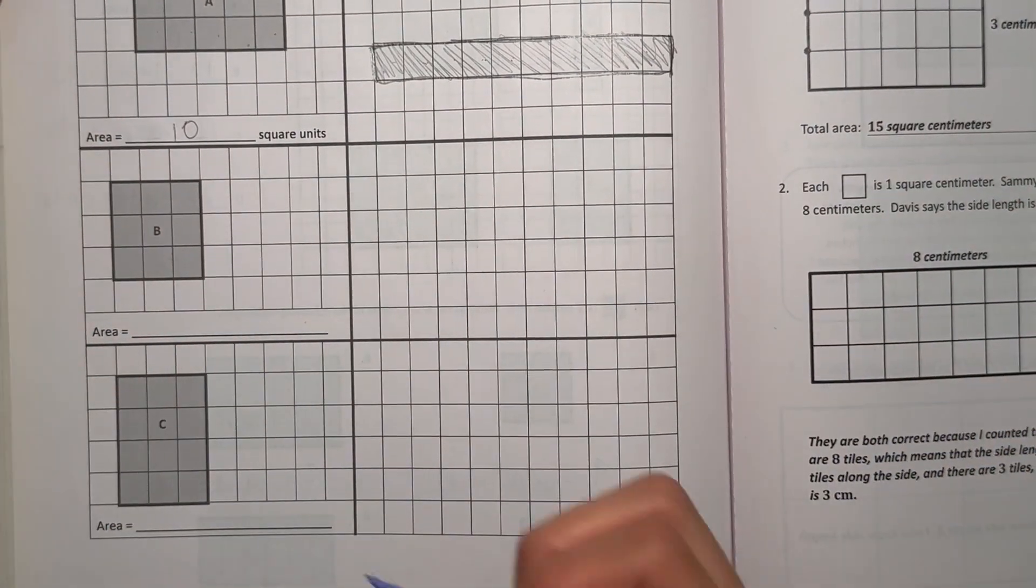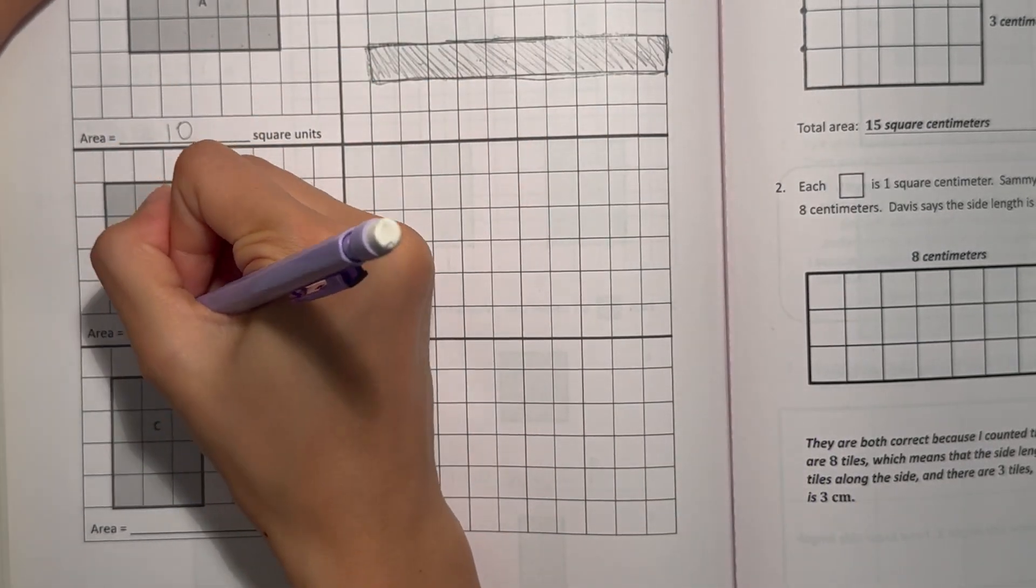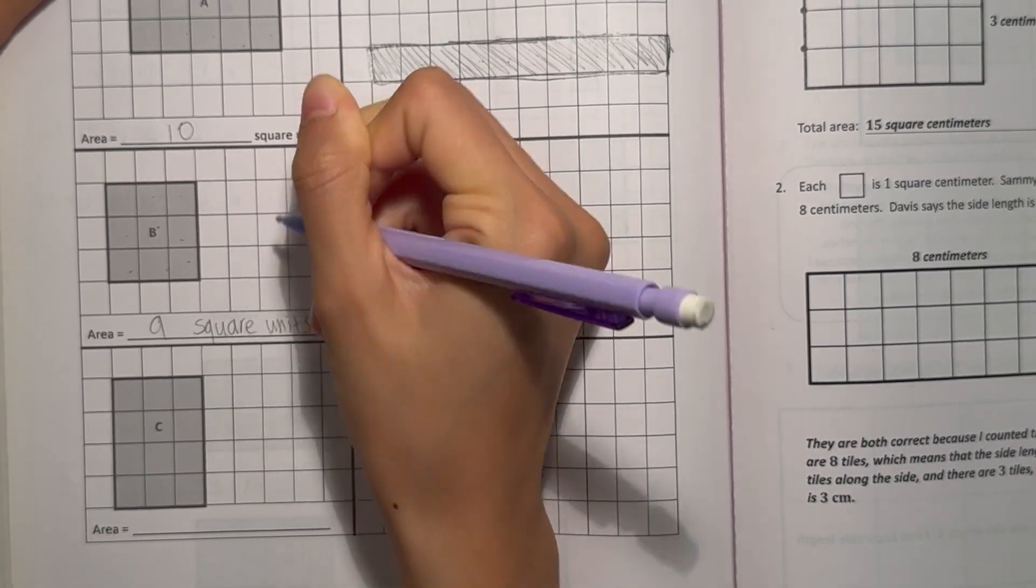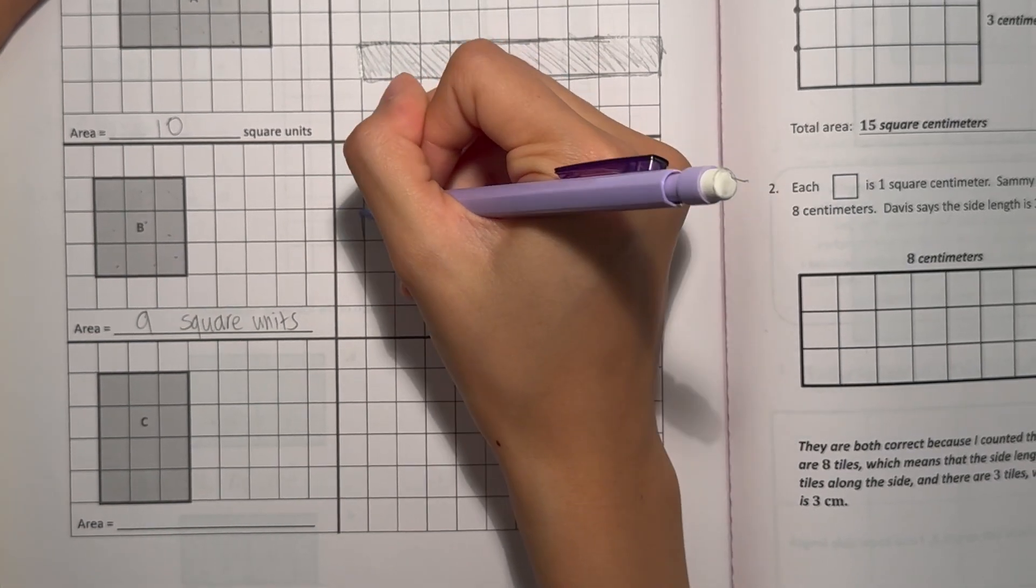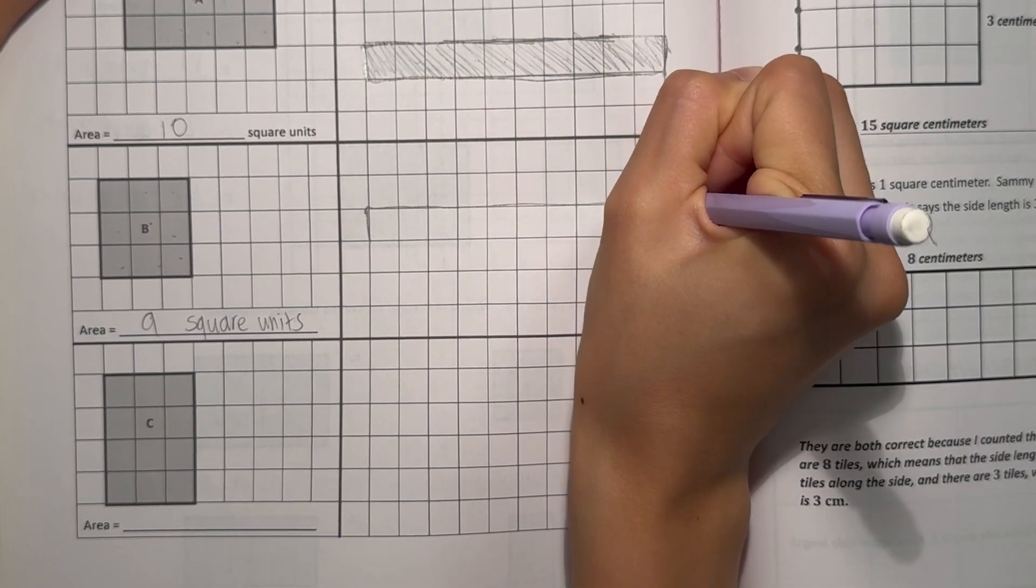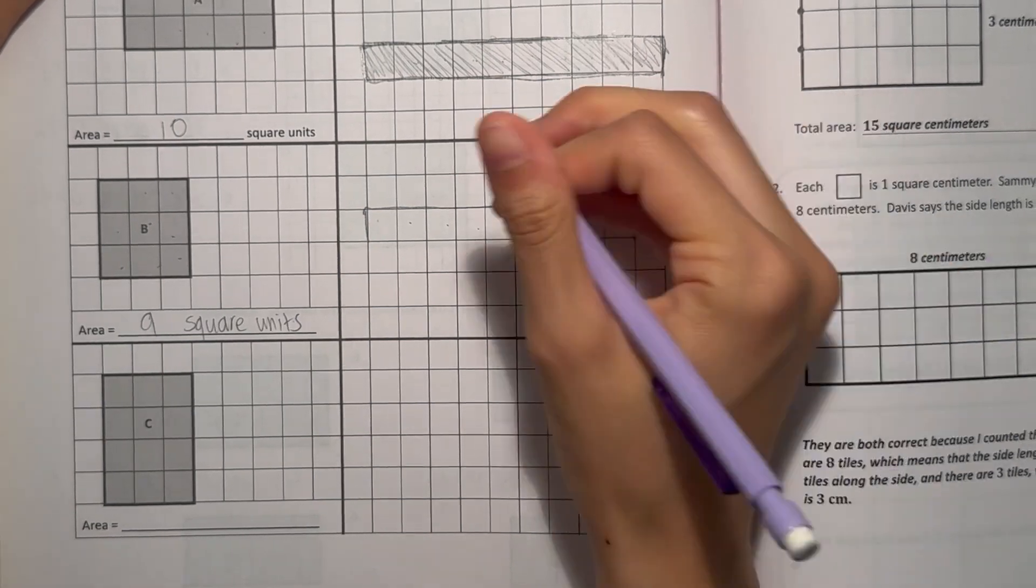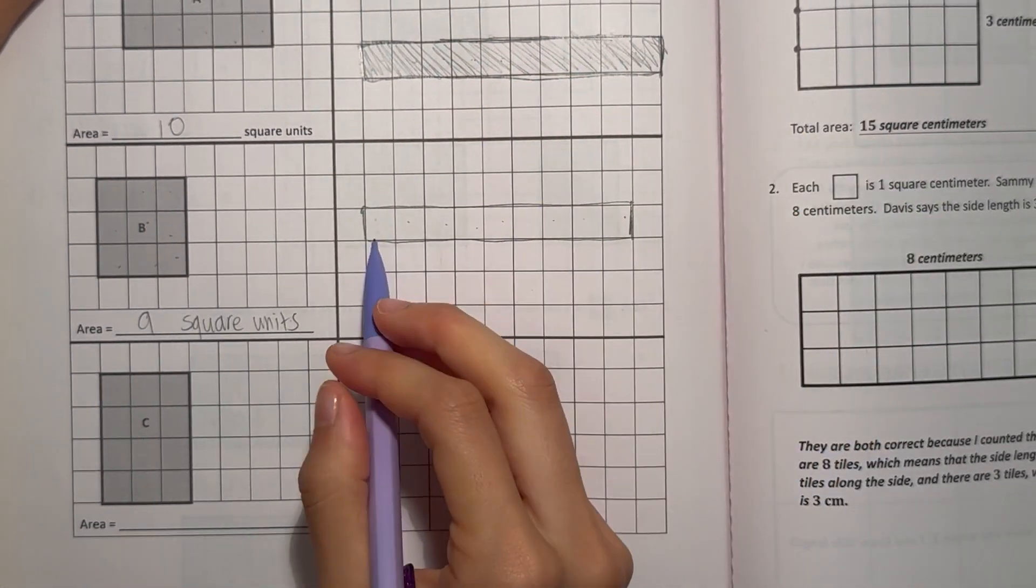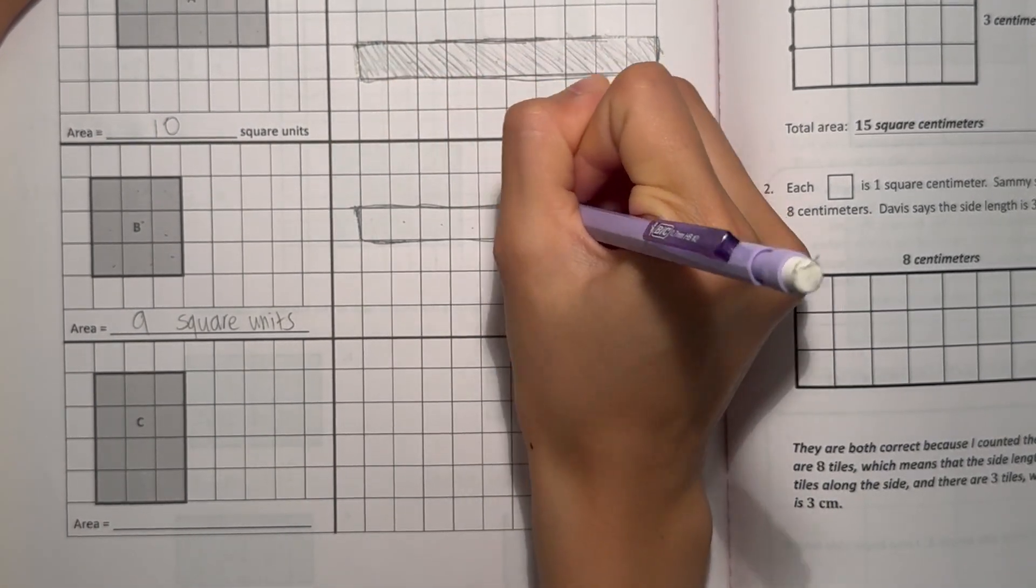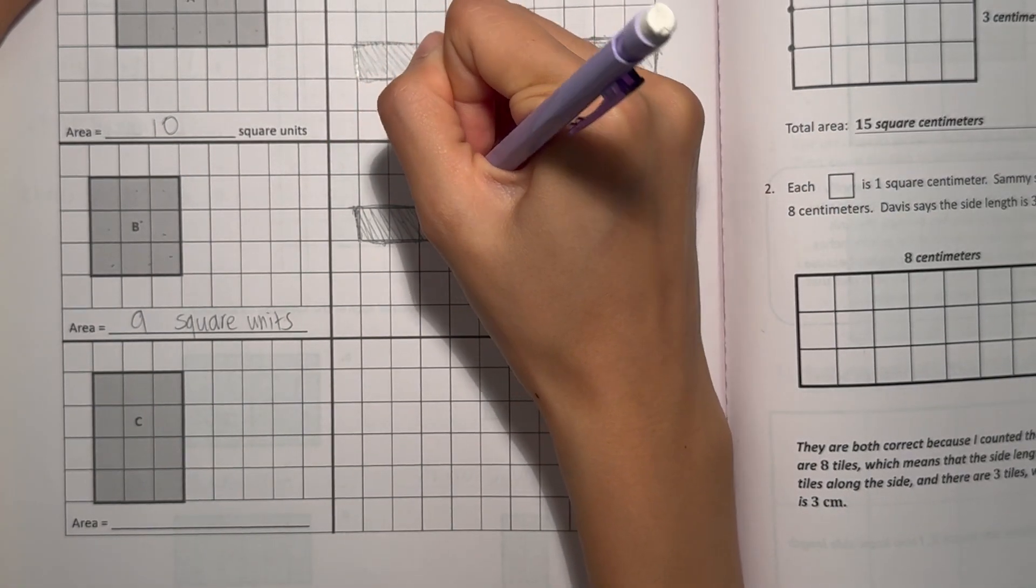And next one would be 1, 2, 3, 4, 5, 6, 7, 8, 9. So our area is 9 square units. Let's draw here. 1, 2, 3, 4, 5, 6, 7, 8, 9. This is our rectangle. You can kind of shade it to see it better.